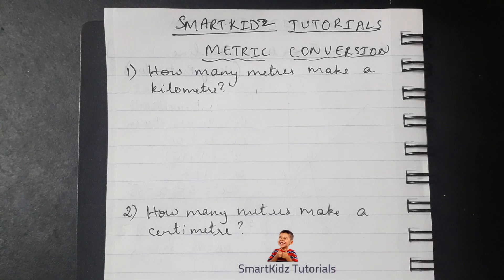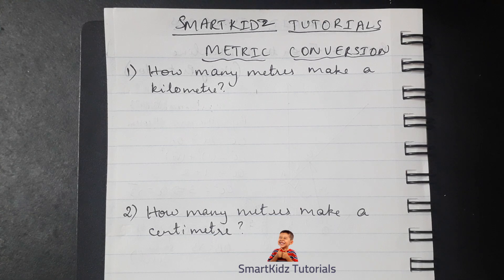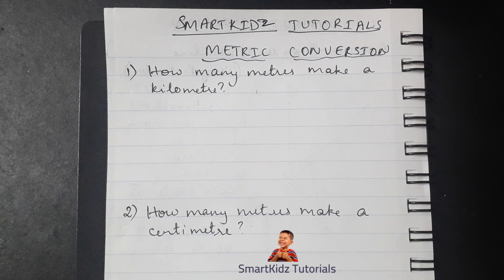Hello students, welcome to Smart Case Tutorials. In this video we will be learning about metric conversion, applying the knowledge we gathered in the previous video about metric units and how we change from larger units to smaller units. We should also remember the story about King Henry and how we can apply it in remembering the metric system. Remember: King Henry Died Unexpectedly Drinking Chocolate Milk. We'll be applying that now to help us solve the questions in front of us.